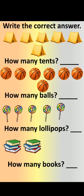Now let's come to another question. Write the correct answer. It means you have to count the objects, then write the answer in the given dash. The first object is tent. How many tents are here? Let's count it together.